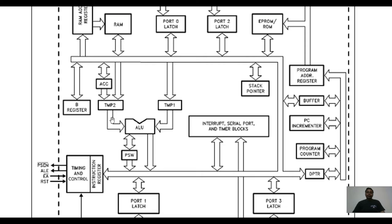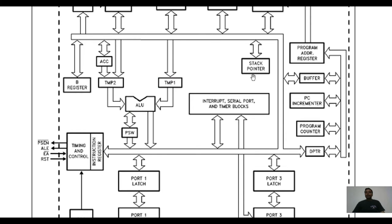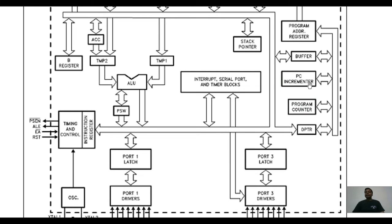The ALU output can be identified through flags present in a register called PSW, which stands for Program Status Word. There are two general-purpose registers: the accumulator and the B register, used for arithmetic and logical operations. We also have a stack pointer — the stack is a part of RAM used for storing temporary data — along with program address registers and buffers.